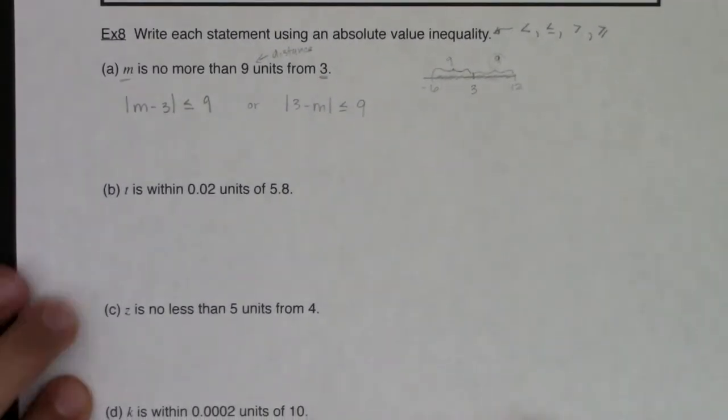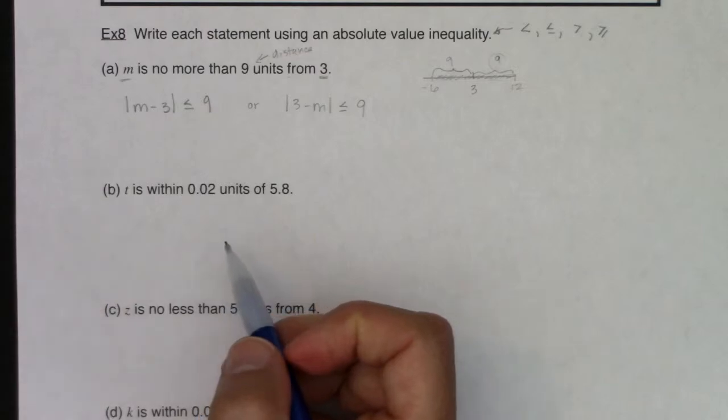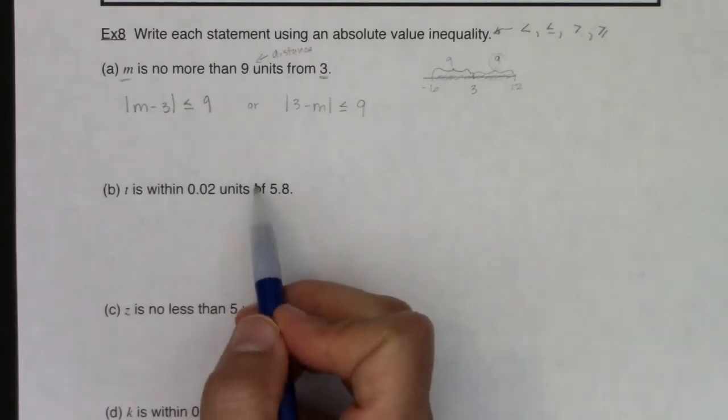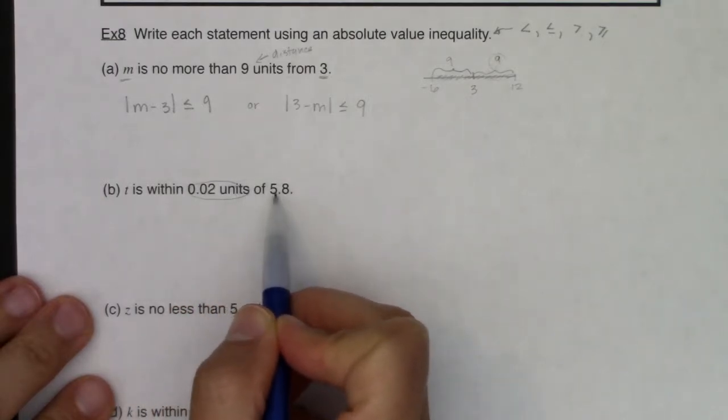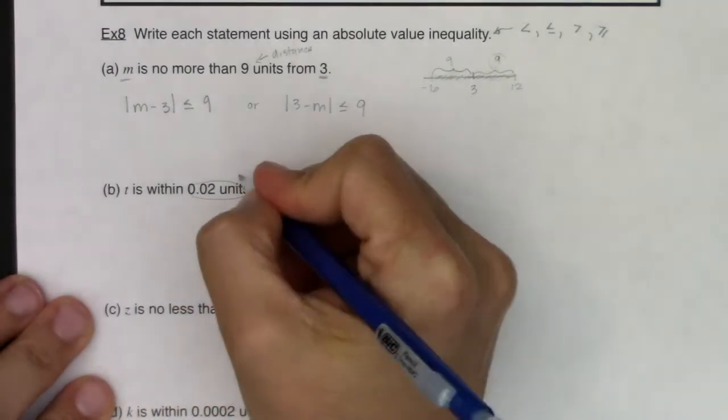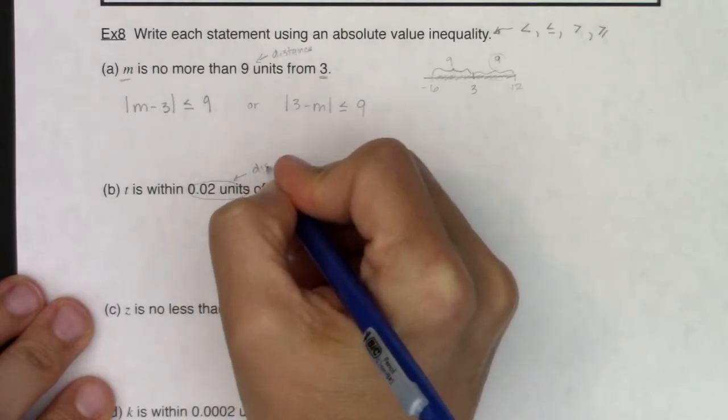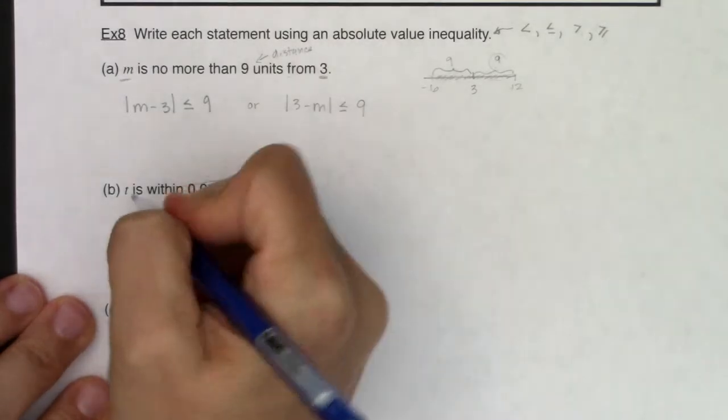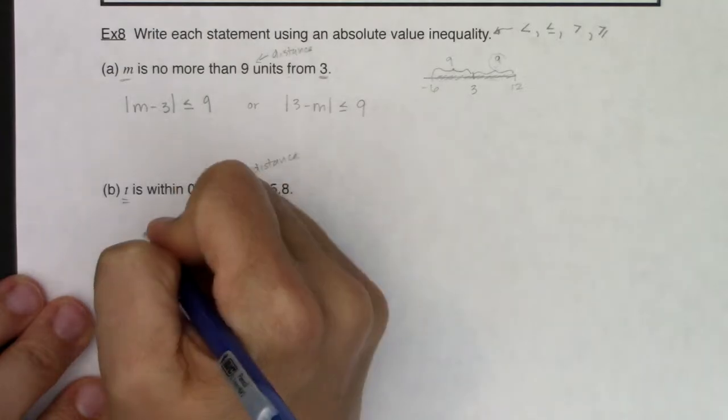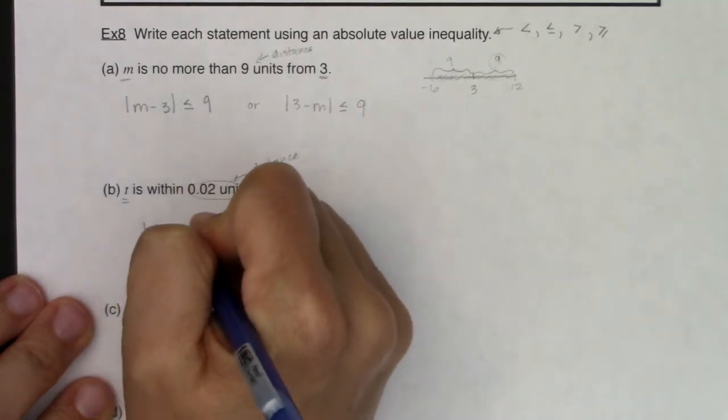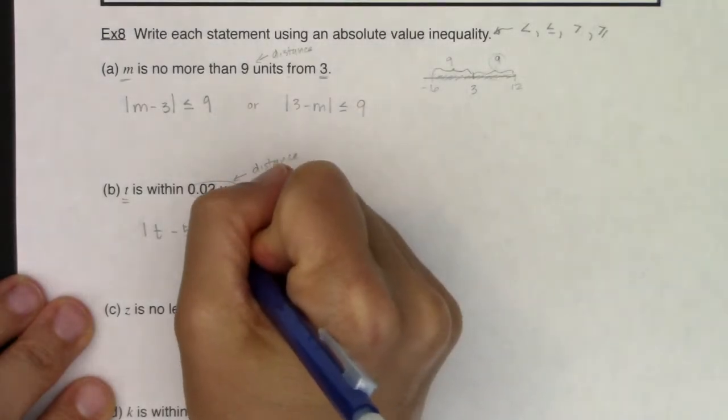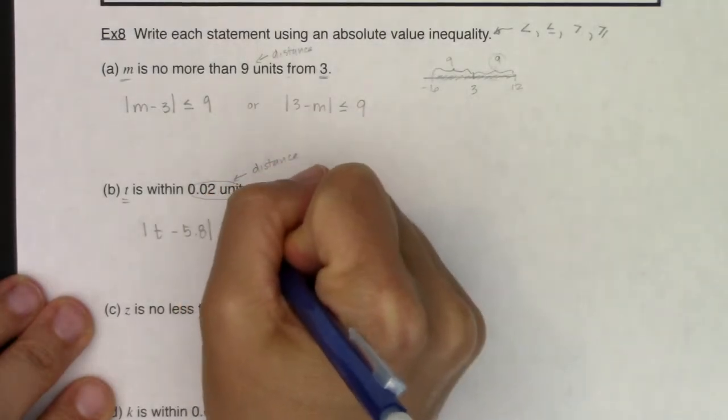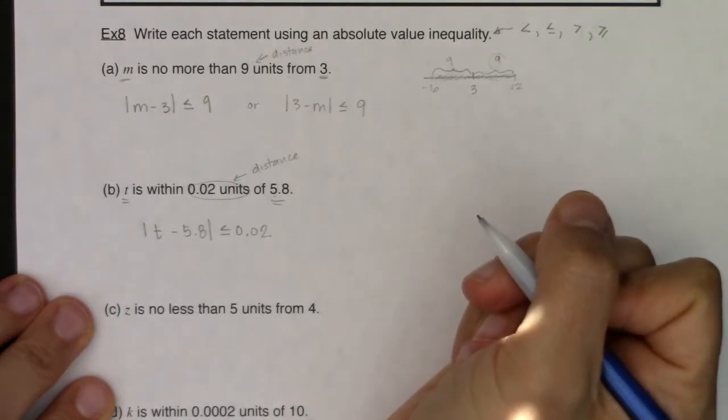I have here t is within 0.02 units of 5.8. So here's my distance. They're telling me don't be too far away from 5.8. So my distance is the distance between t and 5.8. So I need the absolute value of t minus 5.8. If I'm within 0.02 units, it means that distance should be less than or equal to 0.02.